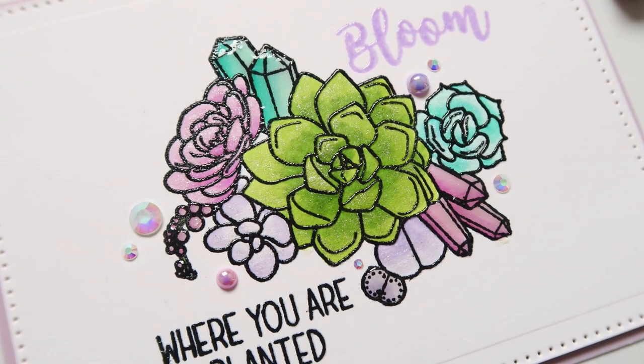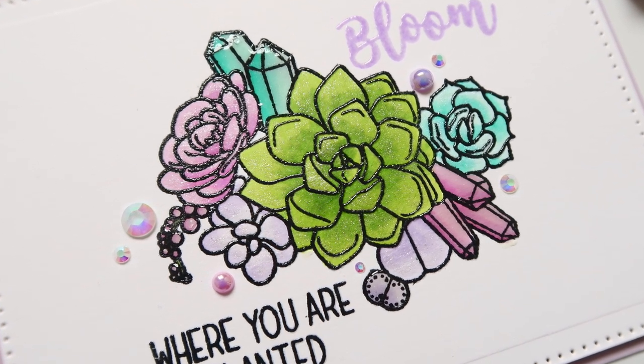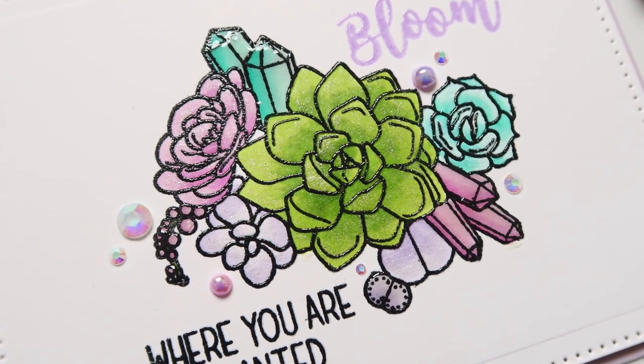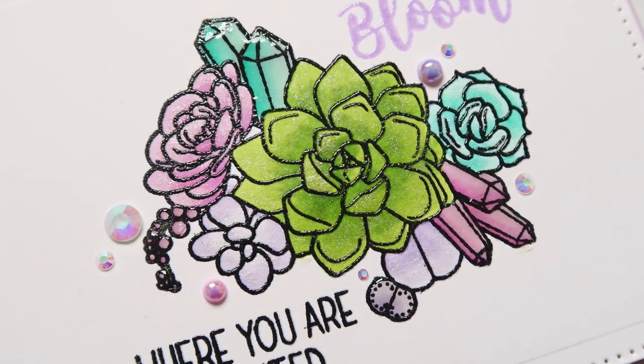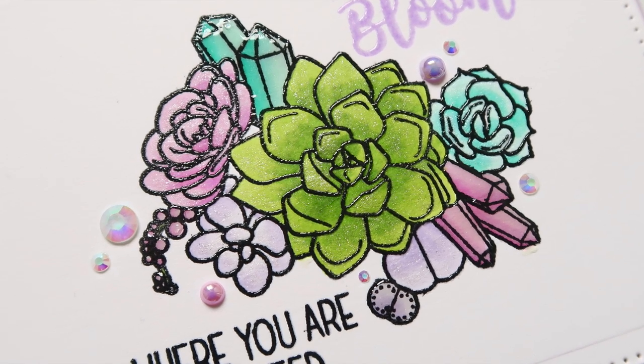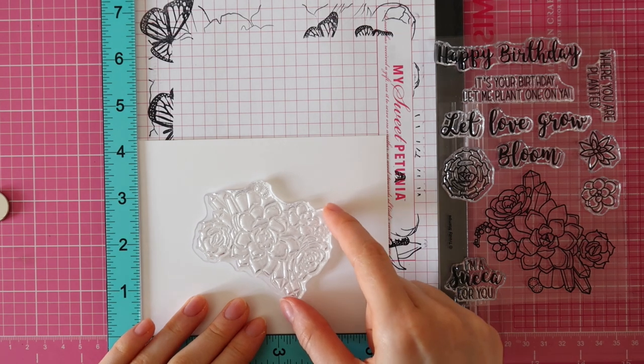Today's video is part of a fun collaboration blog hop from Trinity Stamps and WOW Embossing Powder. In this video, I'll be showing you how to color the succulents from the Let Love Grow stamp set from Trinity Stamps, and I'll also be showing you how to add lots of gloss and shimmer to your project.